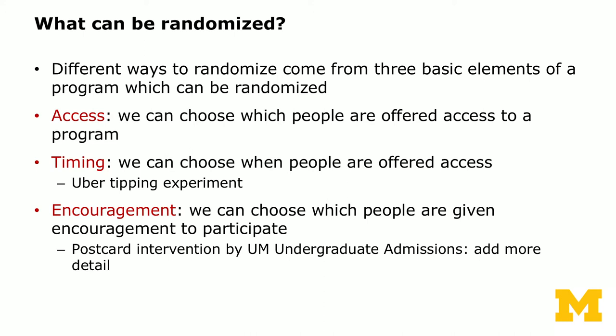We'll use the Uber tipping experiment, which is a real large-scale experiment that they ran in the field before they introduced the tipping feature. We'll also talk about what's called an encouragement design, where experimenters can choose which people are given encouragement to participate in a program. In this case, we'll talk about a postcard intervention by the University of Michigan undergraduate admissions office.